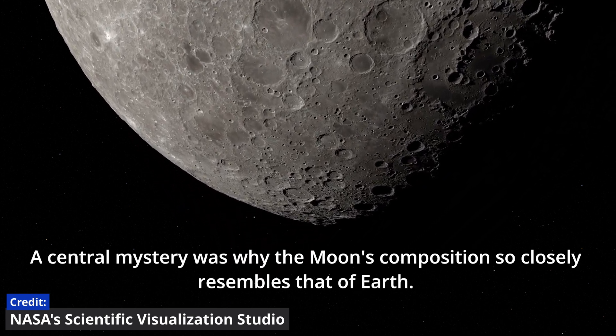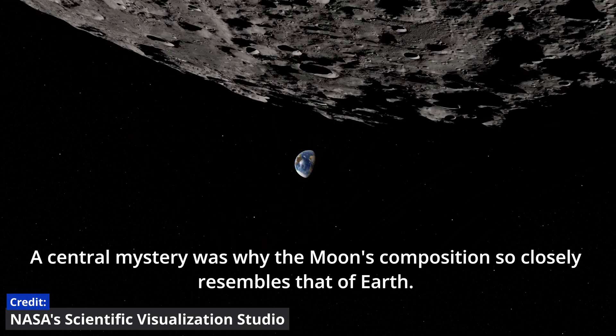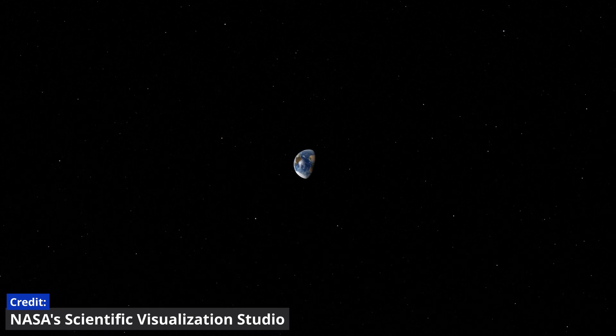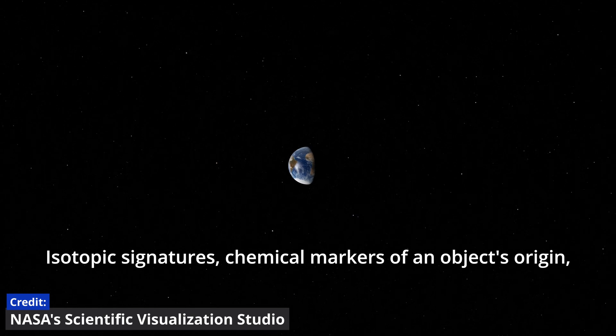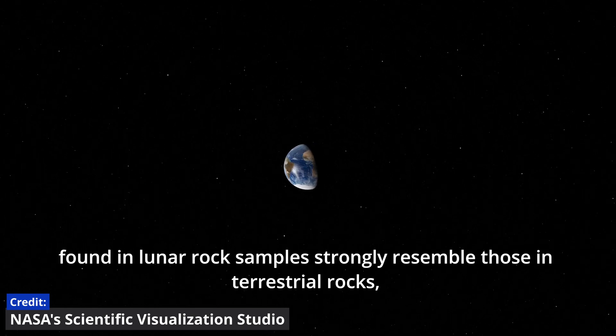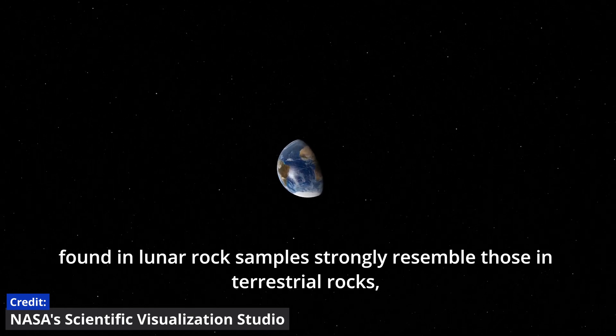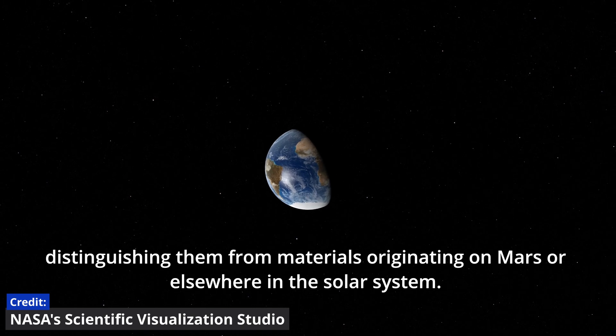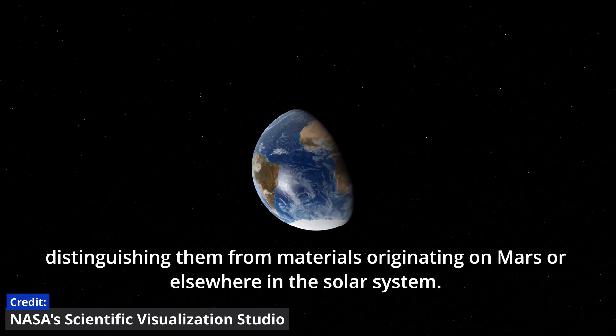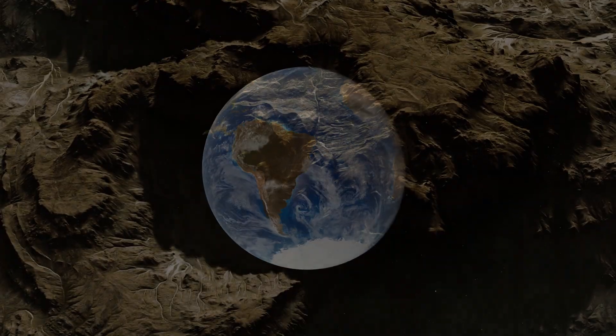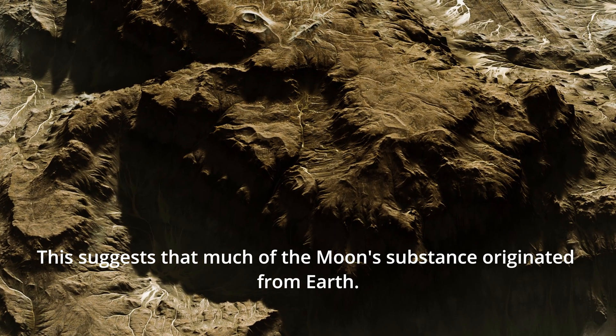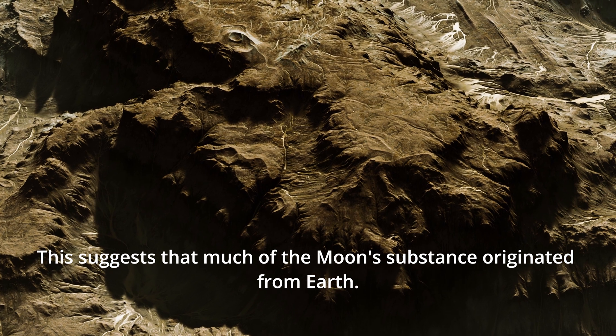A central mystery was why the Moon's composition so closely resembles that of Earth. Isotopic signatures, chemical markers of an object's origin found in lunar rock samples, strongly resemble those in terrestrial rocks, distinguishing them from materials originating on Mars or elsewhere in the solar system. This suggests that much of the Moon's substance originated from Earth.